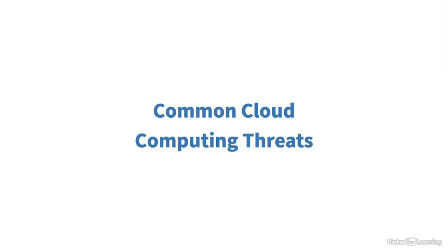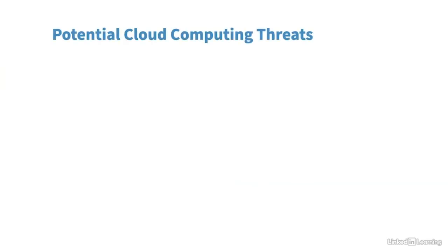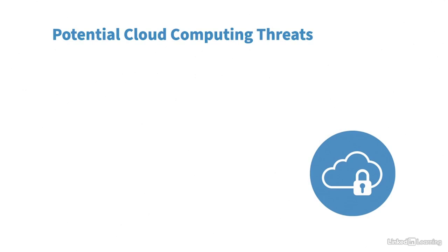Some traditional threats that apply to on-premises computing and software development also apply to the cloud. Take a moment to think about past security incidents in your on-premises environment and how those could be applied to your organization's use of cloud computing. Let's talk about potential cloud computing threats. First: internet visibility of cloud services. If you deploy a Linux virtual machine in the cloud, give it a public IP address, and it's listening on port 22 for SSH remote management sessions, that could be a vulnerability because it's exposed to the internet — attackers could scan the internet looking for listening services and start to attack it.